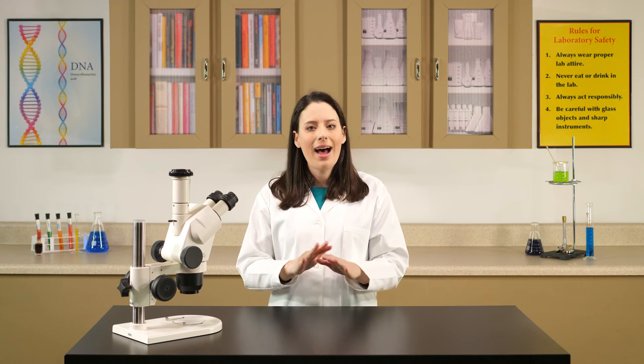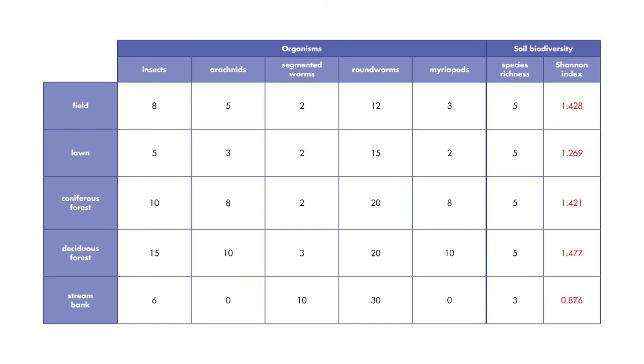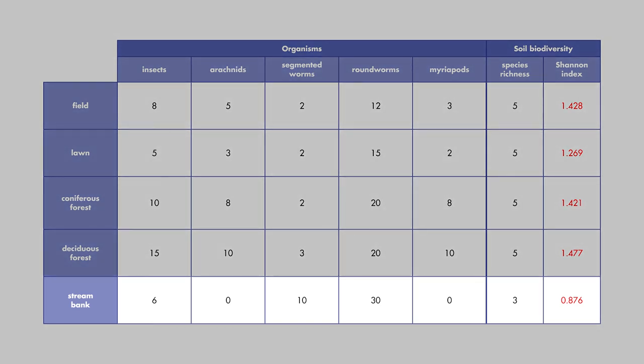For a community to have a Shannon Index of 7 — the highest possible biodiversity — that community would need to have many organisms across thousands of species categories. On our table, the Shannon Index has been recorded for each of the soil samples. The soil from the stream bank has the lowest Shannon Index as well as the lowest species richness, so we conclude that the stream bank ecosystem has the lowest biodiversity and the least potential to support life.